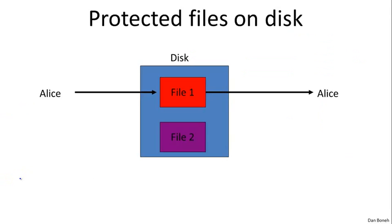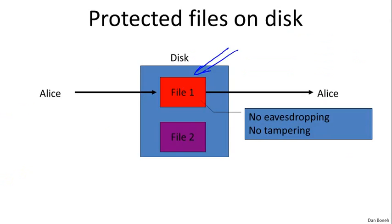Another application of cryptography is to protect files on disk. Here you have a file that is encrypted, so that even if the disk is stolen, an attacker can't read the contents of the file. And if an attacker tries to modify the data in the file while it's on disk, when Alice tries to decrypt the file, that will be detected, and she'll basically ignore the contents. So we have both confidentiality and integrity for files stored on disk.